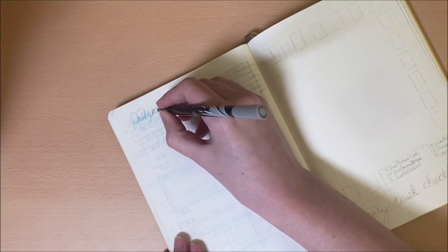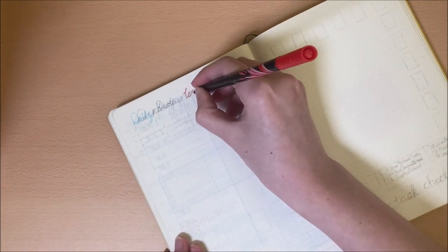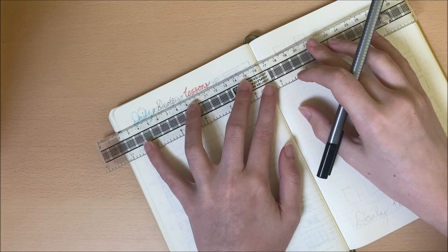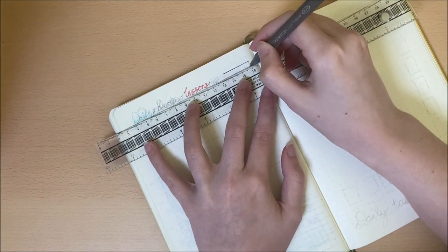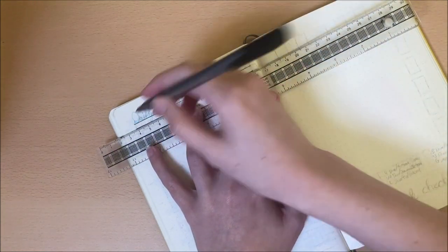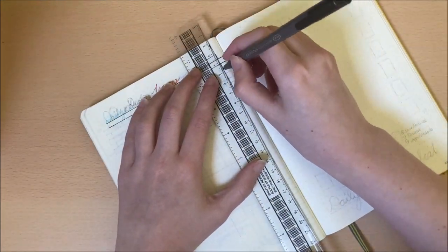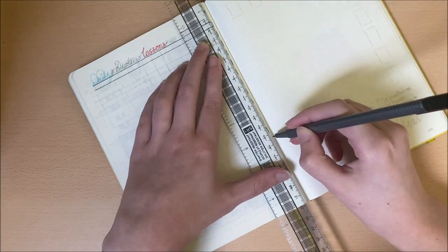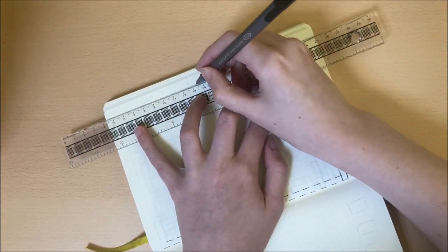This next page easily took the longest out of the entire spread to do. It is a list of every Duolingo lesson in French, along with five boxes for me to tick off each level once I have them complete. It took a long time to draw this out, guys, but I think it has definitely been worth it to keep track of how you're doing.